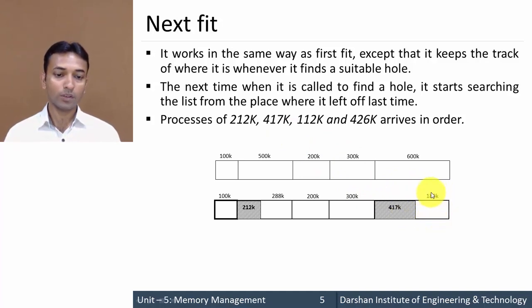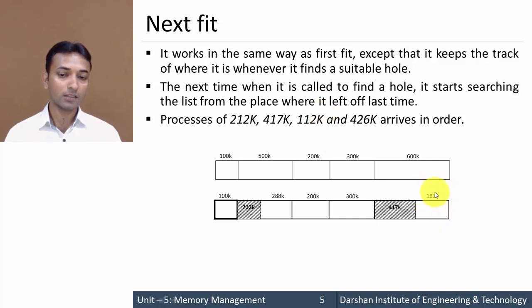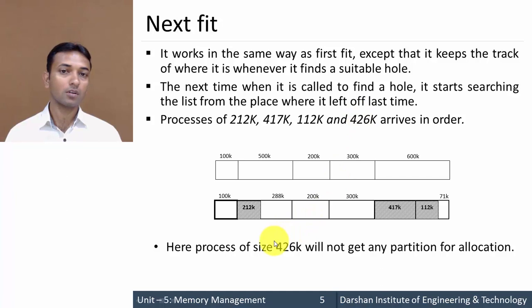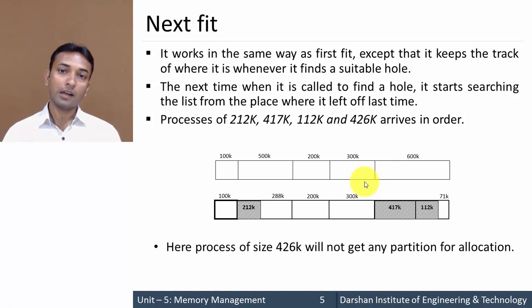For the third process, the algorithm starts searching from where it left off last time; the earlier portion is not searched again. The third process requires 112 KB and the remaining hole of 183 KB is large enough, so it is placed there, leaving 71 KB. The fourth process requires 426 KB and cannot be placed anywhere. The key difference: in First Fit the algorithm always starts from the first position, whereas in Next Fit it starts from where it left off last time.